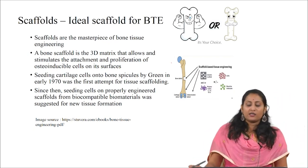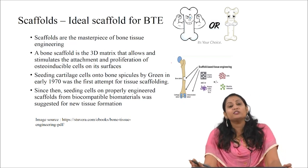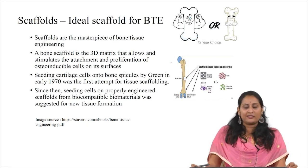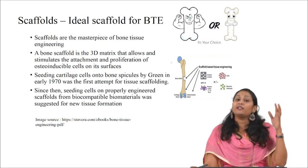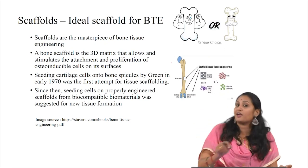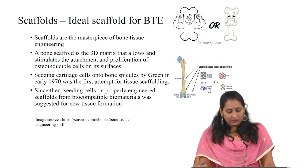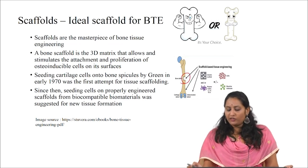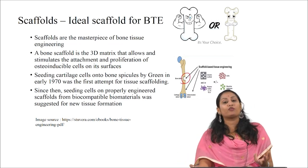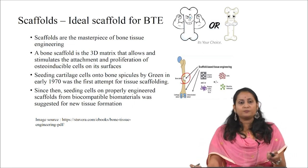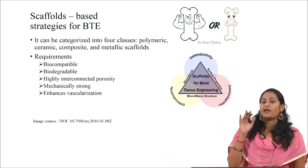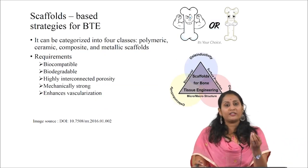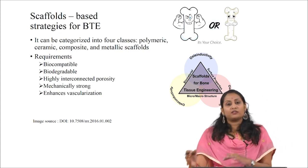Scaffolds are the masterpiece of bone tissue engineering. A bone scaffold is the 3D matrix that allows and stimulates the attachment and proliferation of osteoinducible cells on its surfaces. The first scaffold was developed by Green in the early 1970s, where cartilage cells were seeded into the scaffold — that is how seeding cells on scaffolds was developed. The image shown depicts a long bone with a defect, where we place a scaffold in that defect and check for enhancement or regeneration of the long bone.